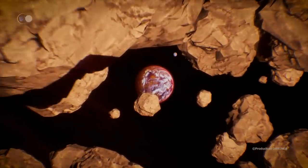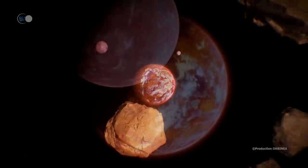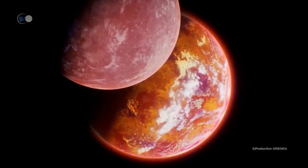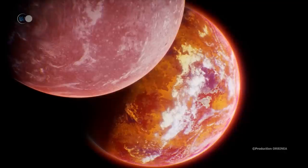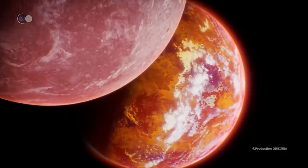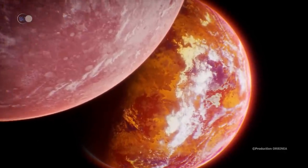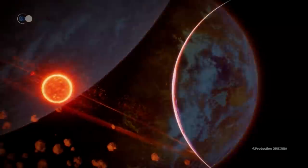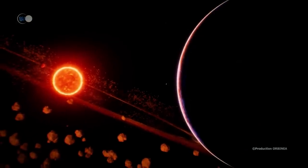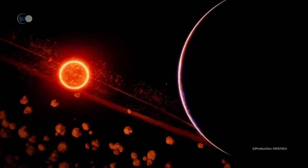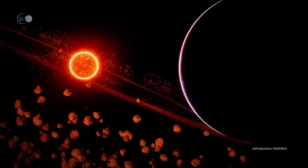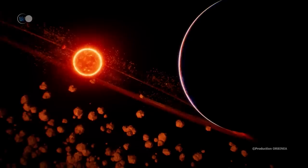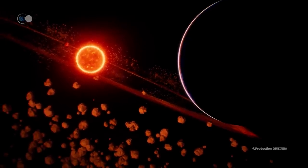The first, Proxima Centauri b, is a telluric planet, located in the habitable zone of its host, at a distance of 7 million kilometers. Its orbital period is just over 11 Earth days. Its mass, about 1.3 times that of our Earth, and its equilibrium temperature, suggest that there could be water in a liquid state on its surface.